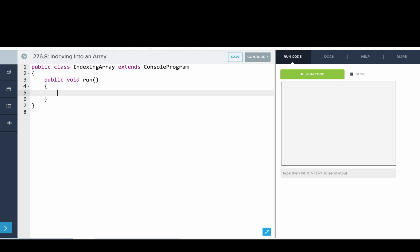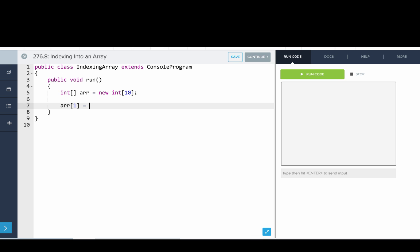Okay, so here we'll look at one more example of indexing into an array. So we'll make a new integer array with 10 spots. And then we'll set the value at index one.